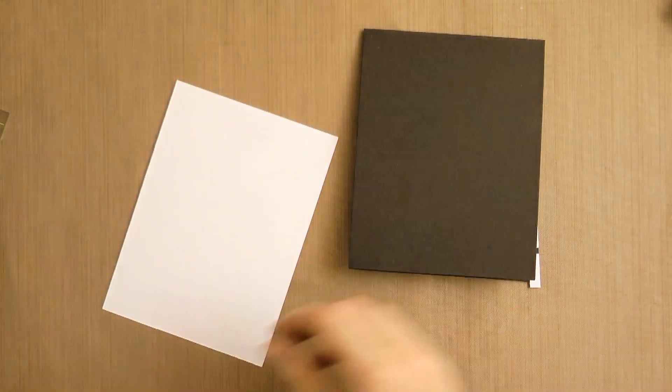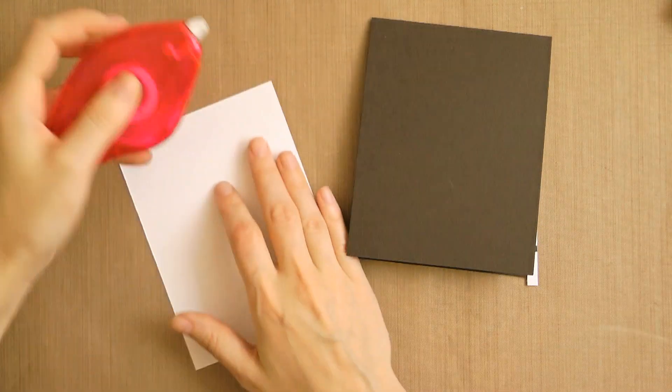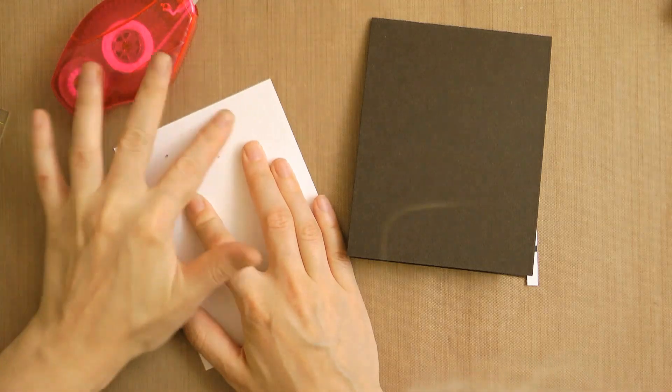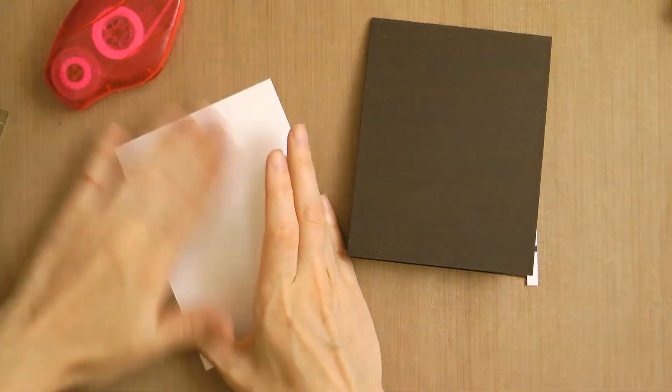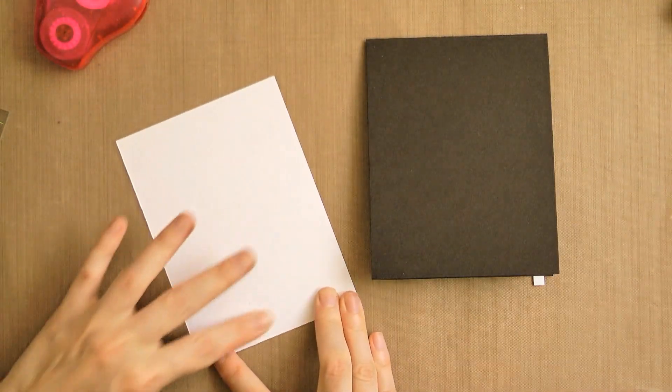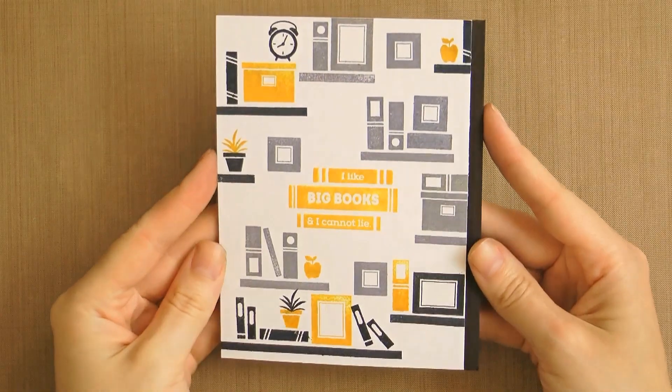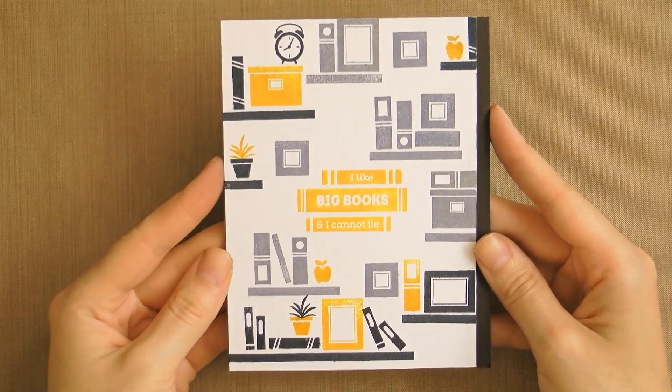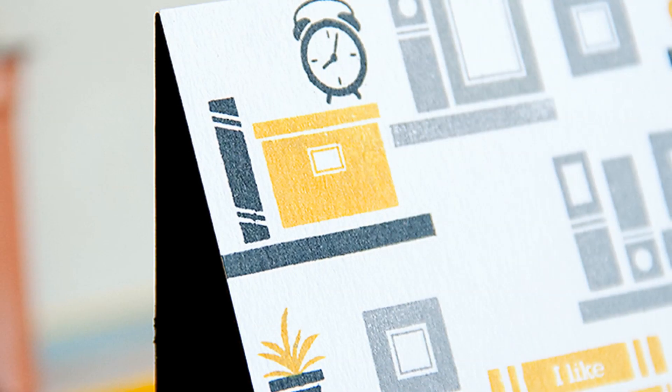So after my stamping was done I trimmed a fourth of an inch off of this white paper as I wanted to have some of the brown showing on the side. I then rubbed off the removable adhesive, added the permanent one with the Scrapbook Adhesives tape runner and adhered this white panel to my dark chocolate card base.